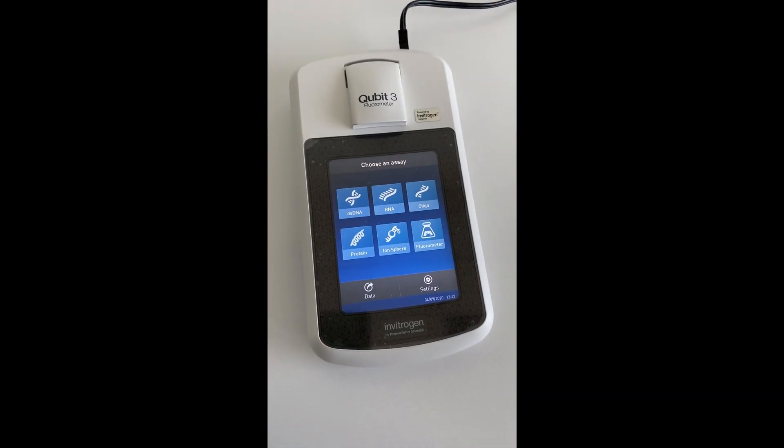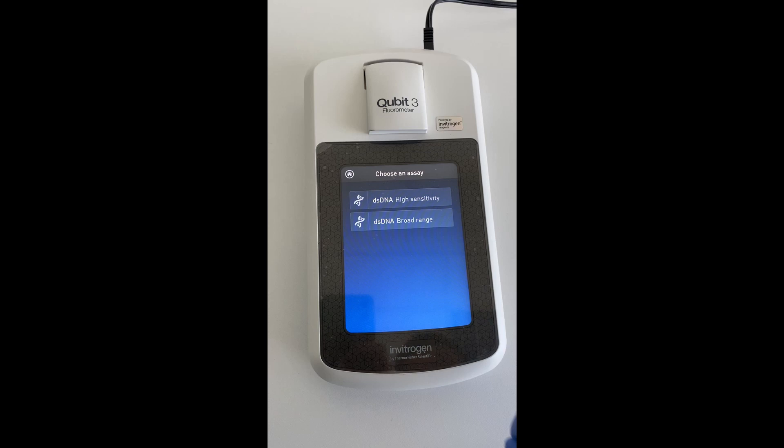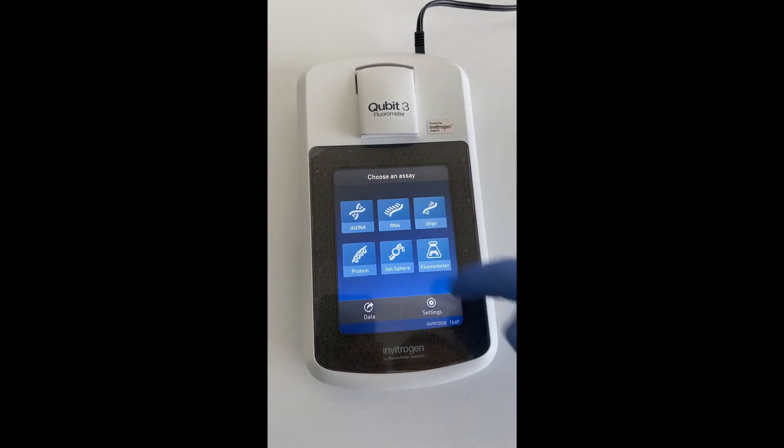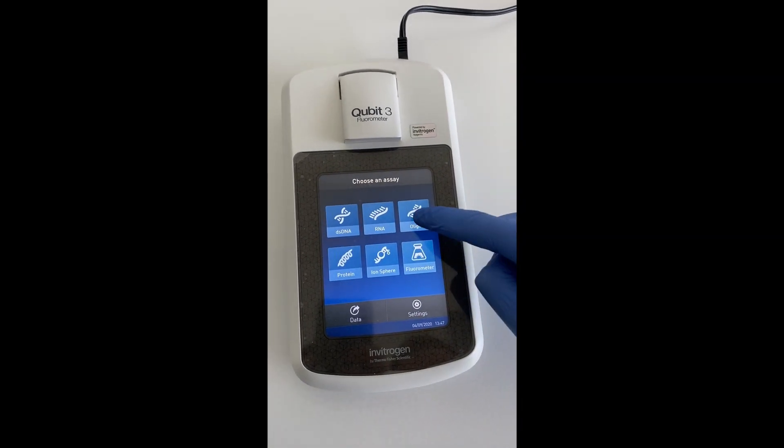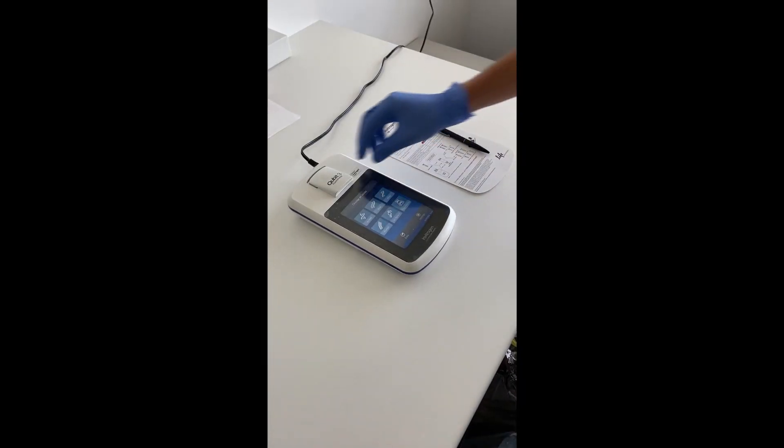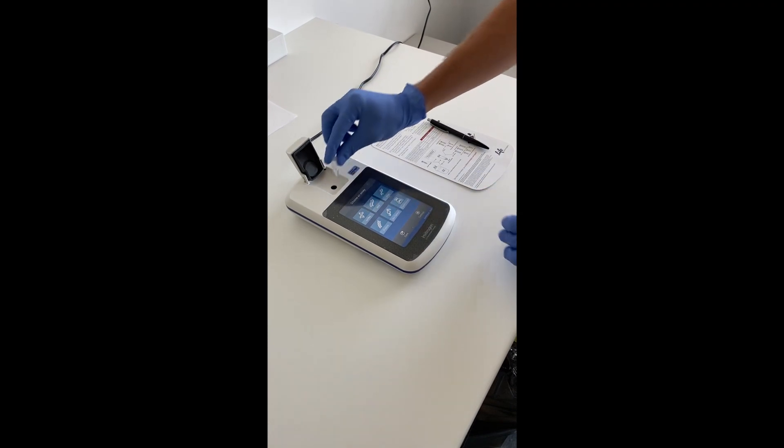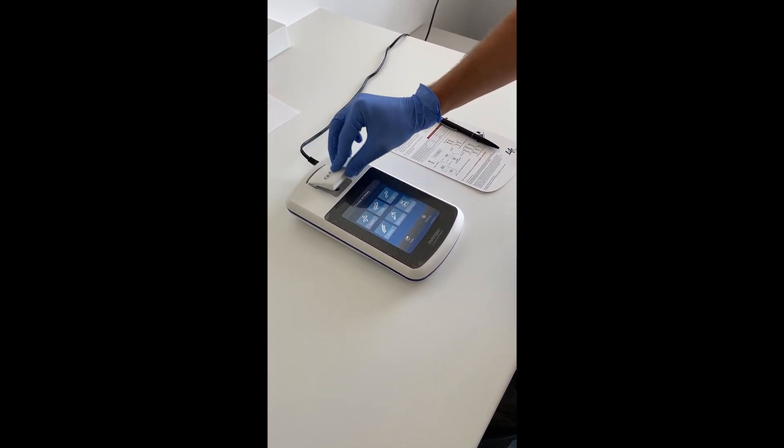The Qubit device is a fluorometer. It is used to measure the concentration of single-stranded as well as double-stranded DNA, RNA, and proteins in samples using a fluorescent dye that is able to be incorporated into these molecules.